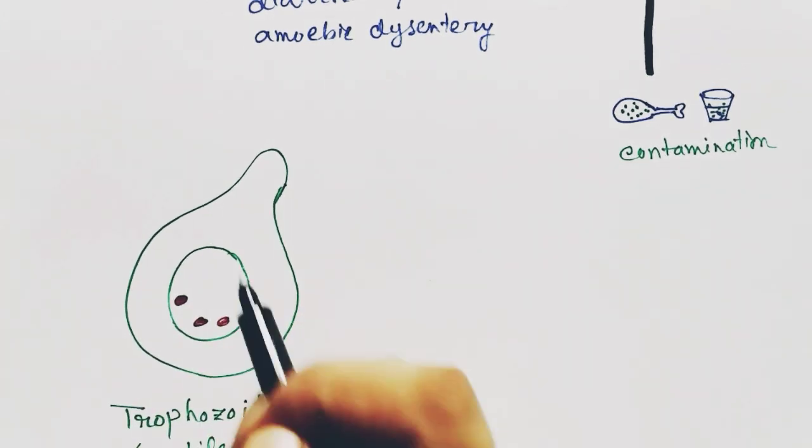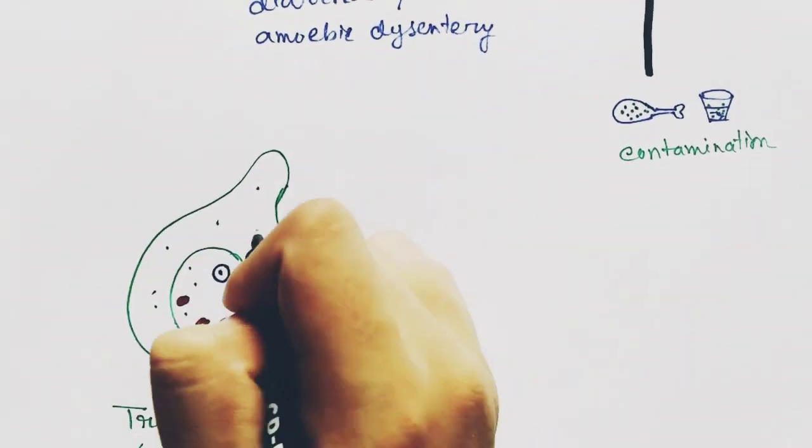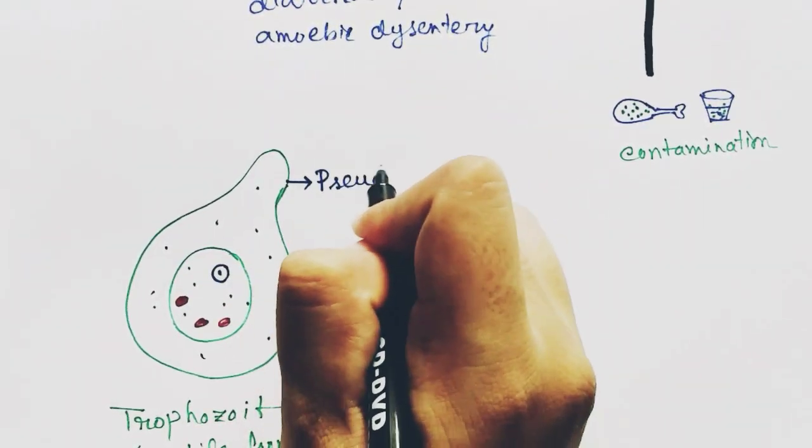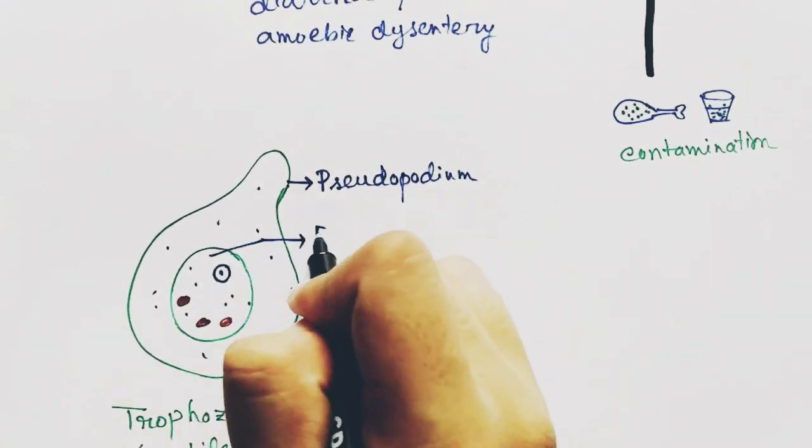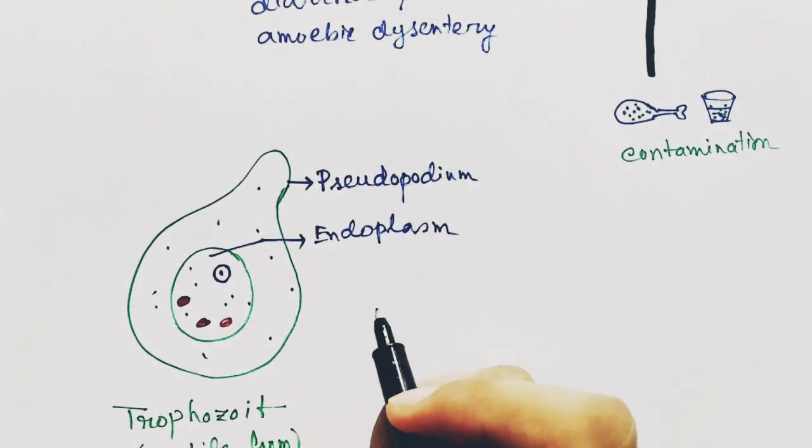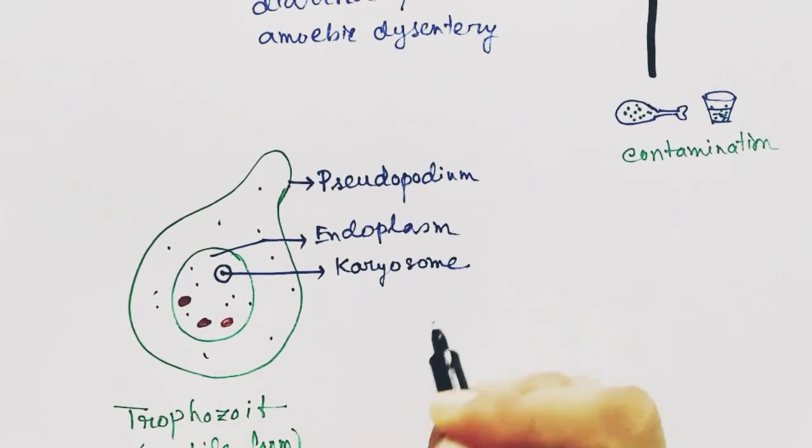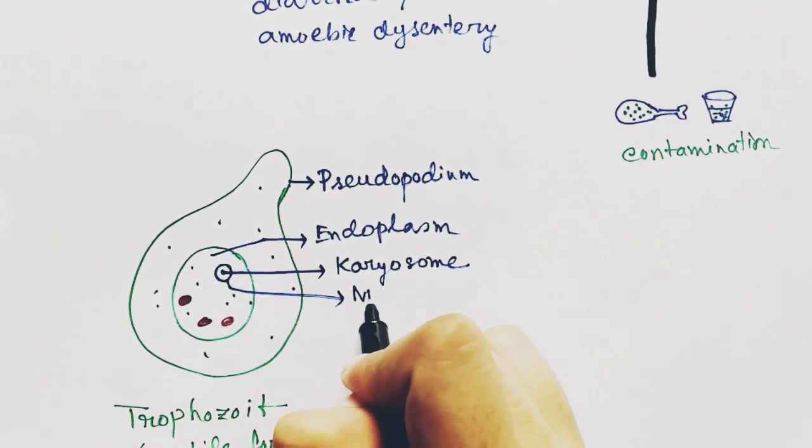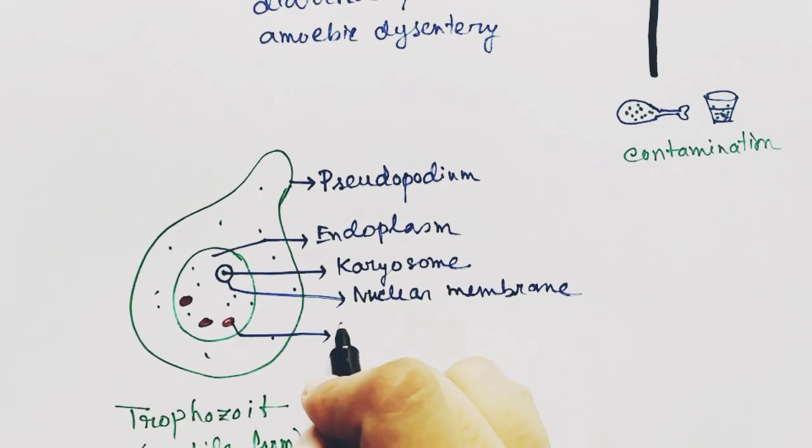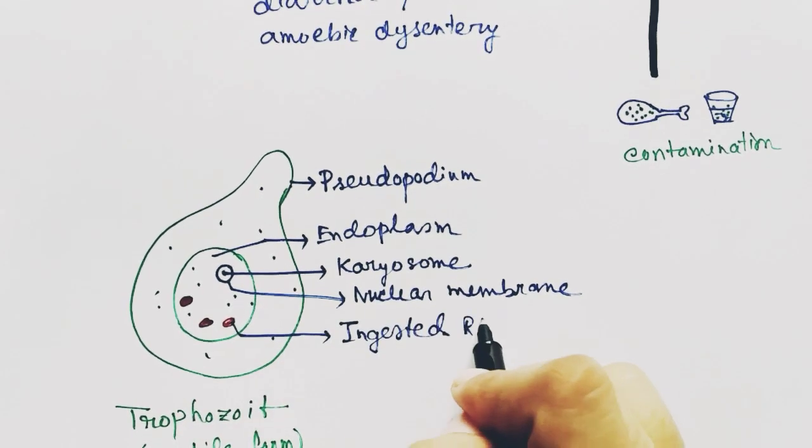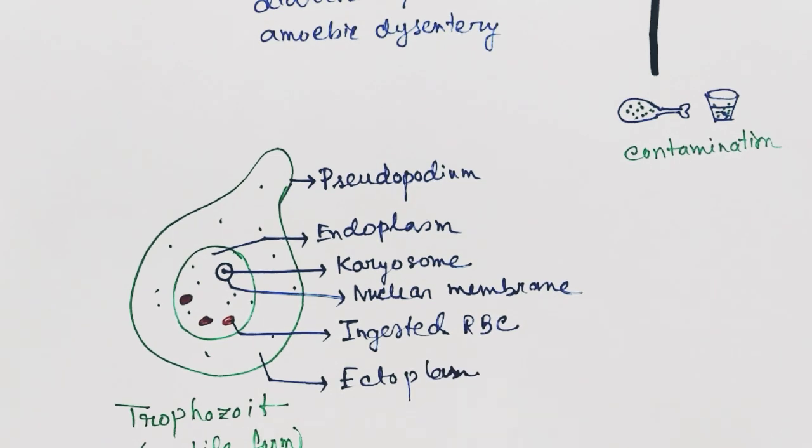The structure has pseudopodium, the endoplasm, the karyosome, and the nuclear membrane. It also shows ingested RBCs—these are the red blood cells ingested by these trophozoites from our body.